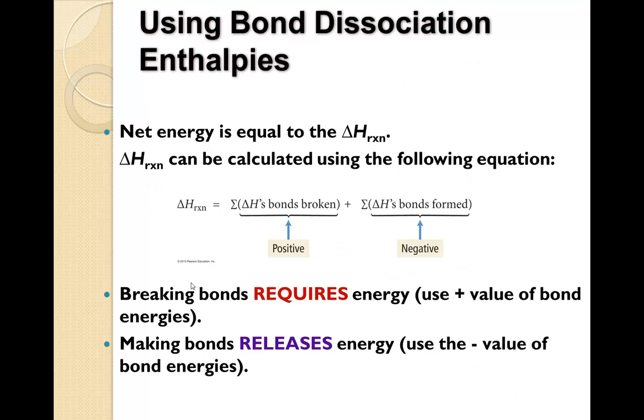So how do we use these bond energies to determine the amount of energy in an actual reaction? The net energy is equal to the delta H of the reaction, which is the enthalpy, once again. Delta H of a reaction can be calculated using this equation.